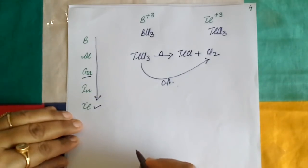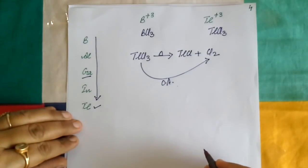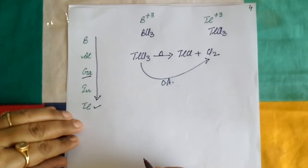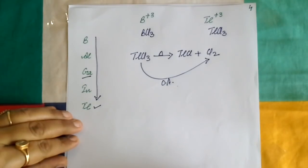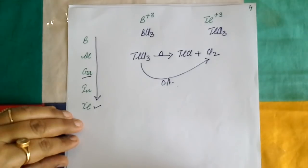Similarly, with the help of this concept, we can explain the inert pair effect in group 14, 15, and 16 elements also. That's all for today. Thank you.